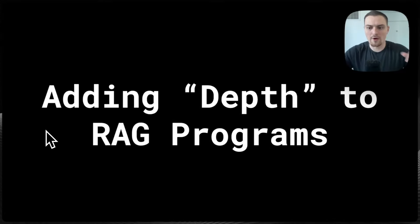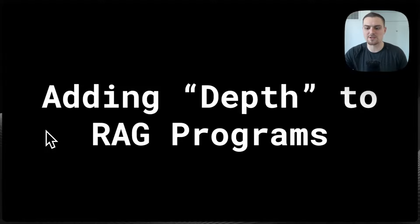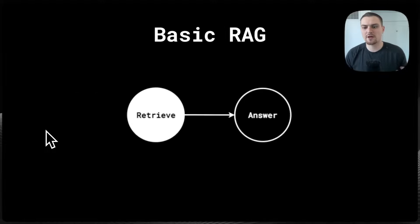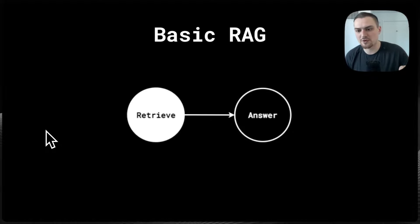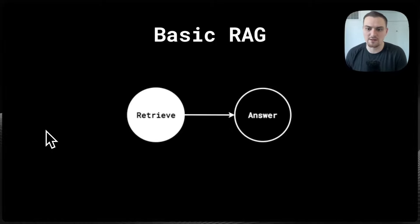Let's shift gears into some deep dives into technical concepts. We'll start off with what it means to add depth to DSPy programs, particularly through the lens of adding depth to retrieval augmented generation systems typically used for question answering or chatbots. Basic RAG: you take a query, pass it into a retriever, and then have a question answering LLM. We're highlighting retrieve in white as a non-parametric tool, and the answer in black as an LLM — a parametric part of our DSPy program.